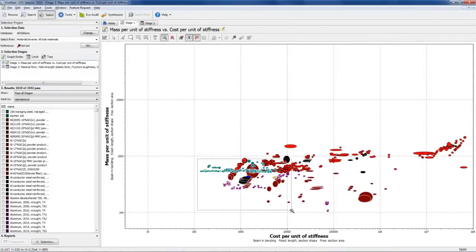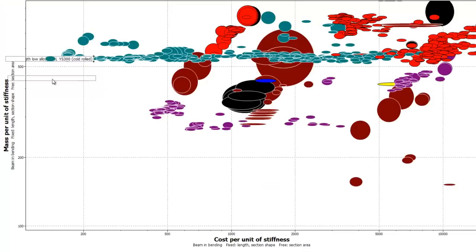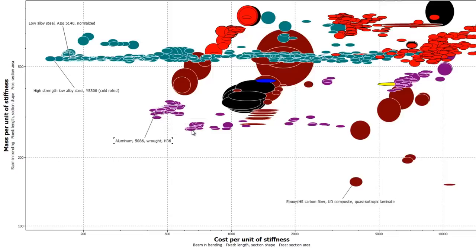This leaves us with a mass versus cost trade-off for the remaining viable materials. Low alloy steels are lowest cost but relatively heavy, carbon fiber composites are much lighter but expensive, and aluminum and magnesium alloys fall between the two.